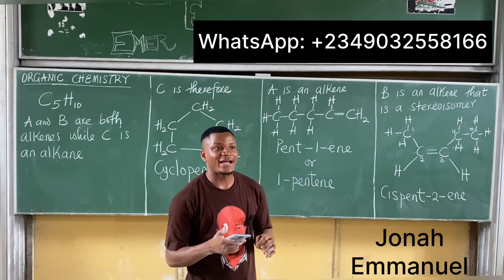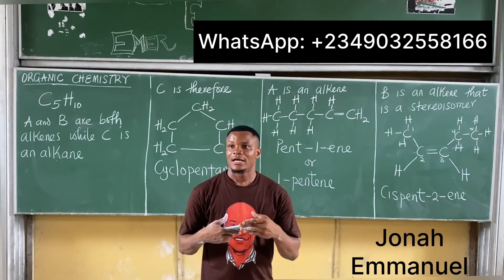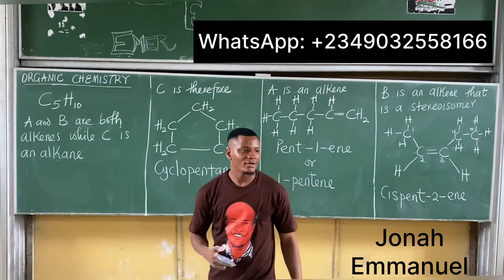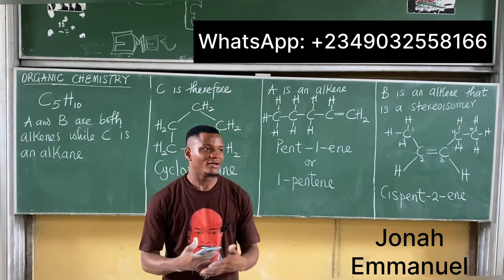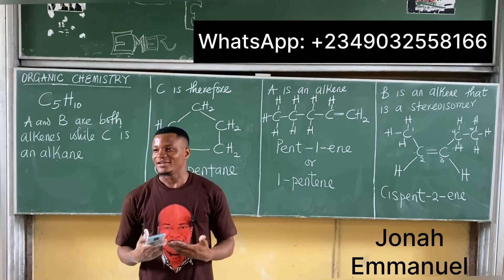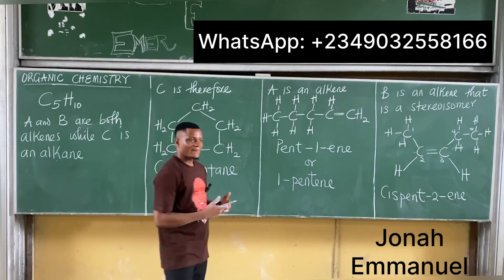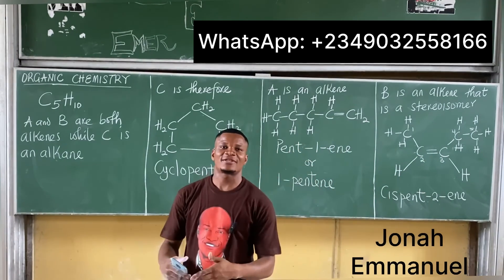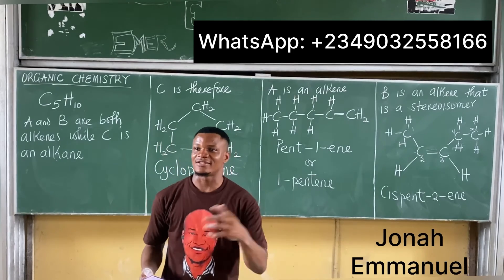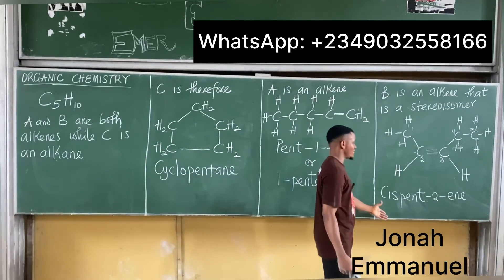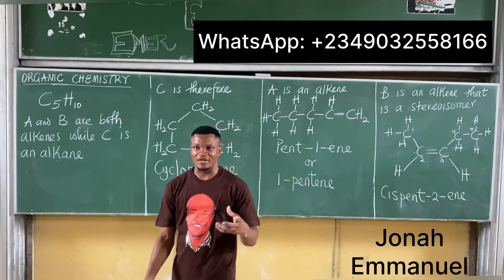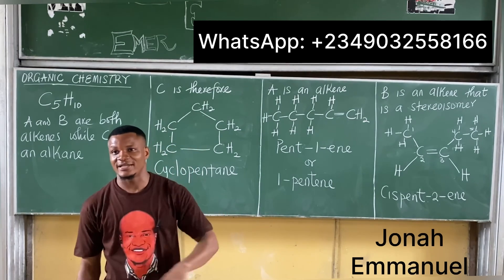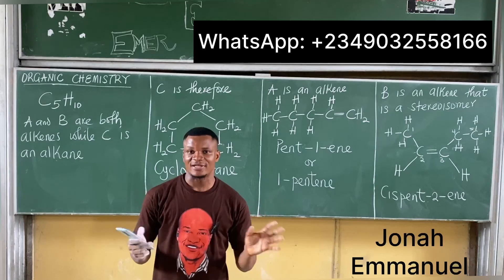The final part asks: explain how stereoisomerism arises in compound B. For stereo isomers, there are basically two types: cis and trans. Compound B is an alkene with a double bond at carbon two — pent-2-ene — which forms a cis structure and a trans structure. Since B is a stereo isomer, it is either a cis or a trans structure. That is how stereoisomerism arises in compound B.